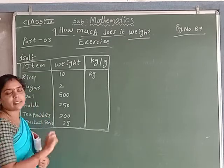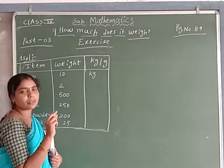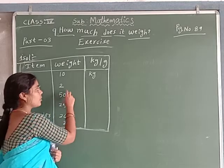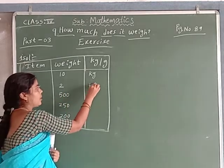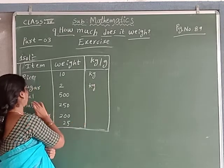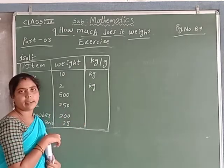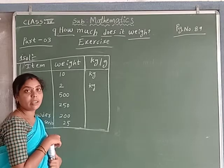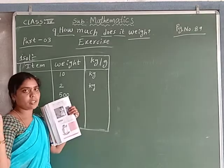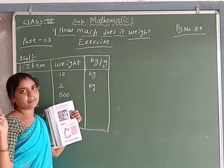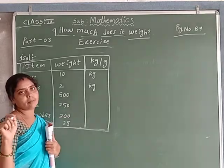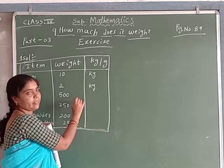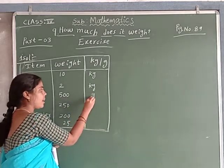Sugar. Sugar — this one. Two kilograms. Dal — 500 grams. Not 500 kilograms. Here it is 500 grams.